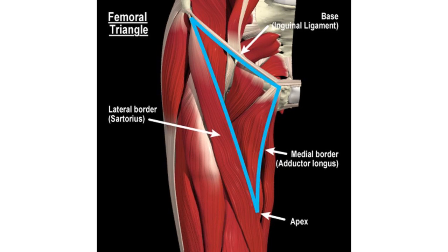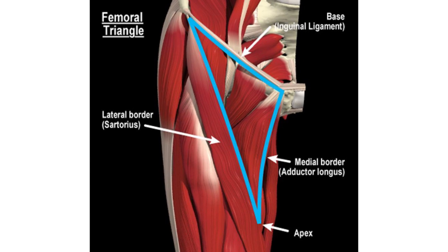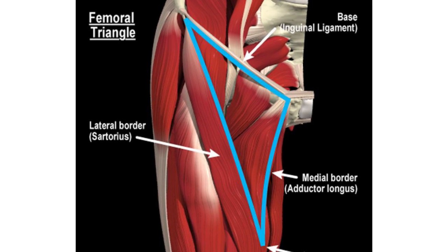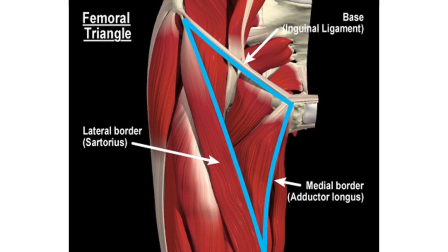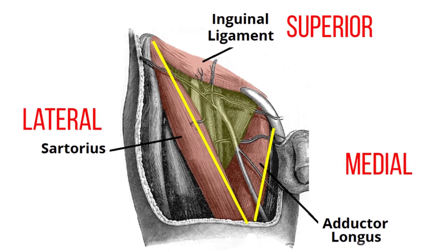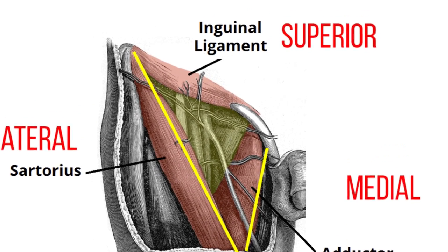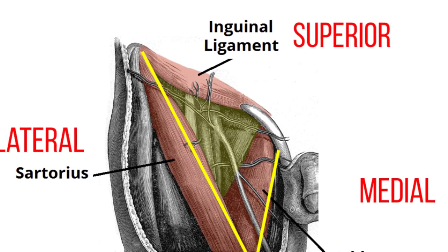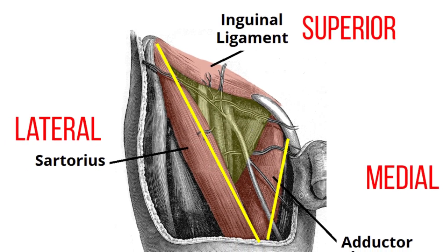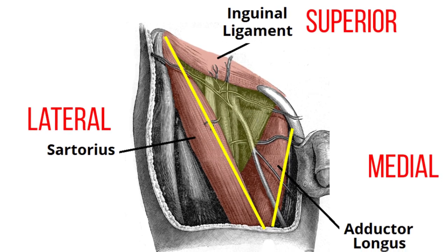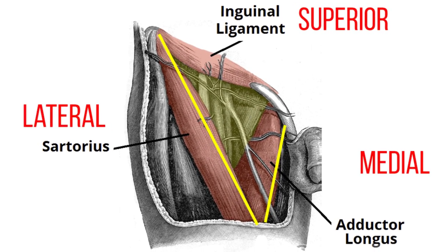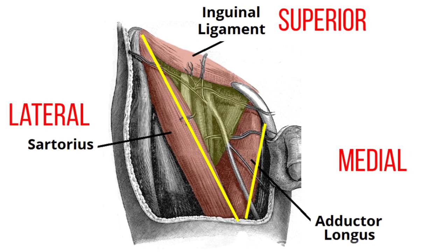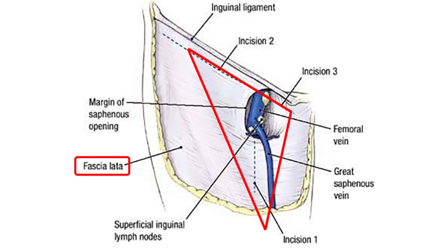As this area is a triangle, it has three borders: the superior border, the lateral border, and the medial border. The superior border is formed by the inguinal ligament, the lateral border is formed by the medial border of the sartorius muscle, and the medial border is formed by the medial border of the adductor longus muscle.